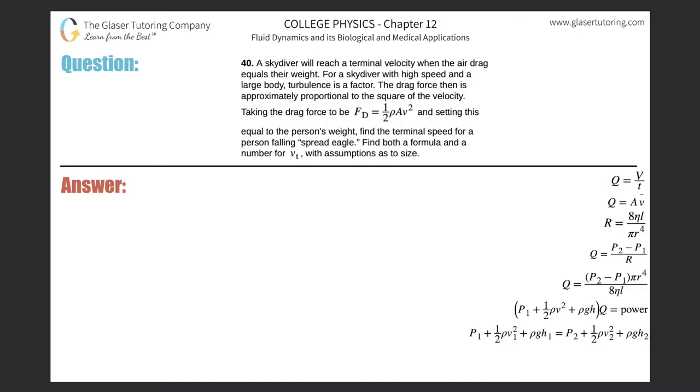Problem 40. A skydiver will reach terminal velocity when the air drag equals their weight. For a skydiver with a high speed and a large body, turbulence is a factor. The drag force is then approximately proportional to the square of the velocity. Taking the drag force and setting this equal to the person's weight, find the terminal speed for a person falling spread eagle. Find both a formula and a number with some assumptions.